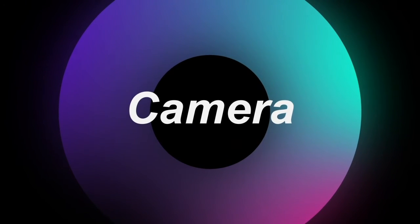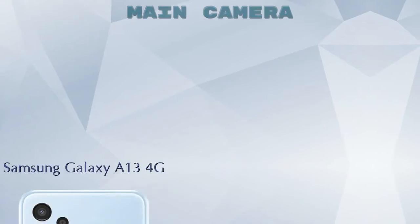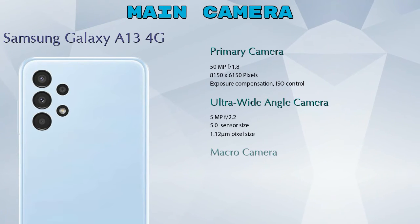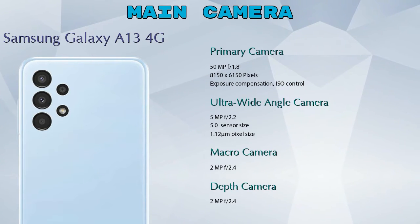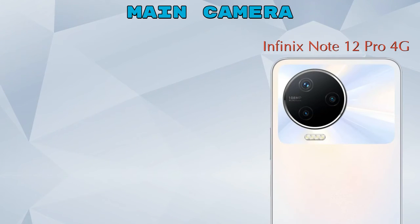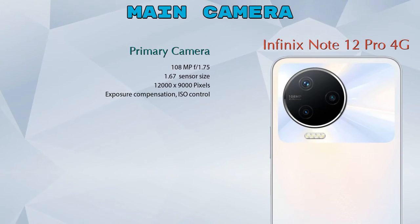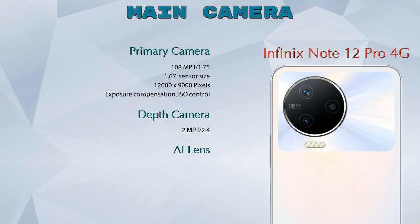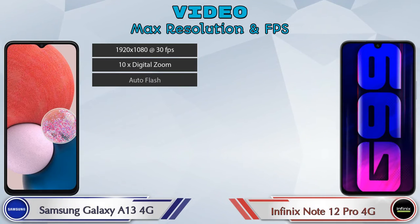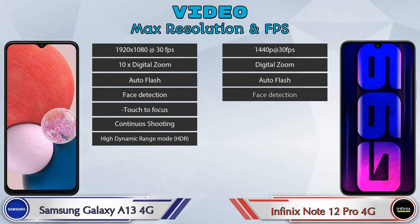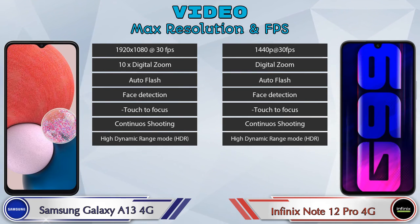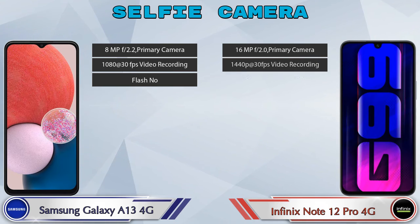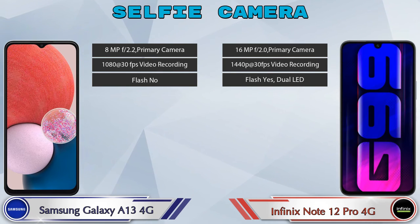Now let's look at cameras. The Galaxy A13 4G has four rear cameras: a primary camera, ultra-wide angle camera, macro camera, and depth camera. The Note 12 Pro 4G has three rear cameras: a primary camera, depth camera, and AI lens. For video, both phones have seven different types of features available. For the front selfie camera, both phones have a single camera with three different features available.